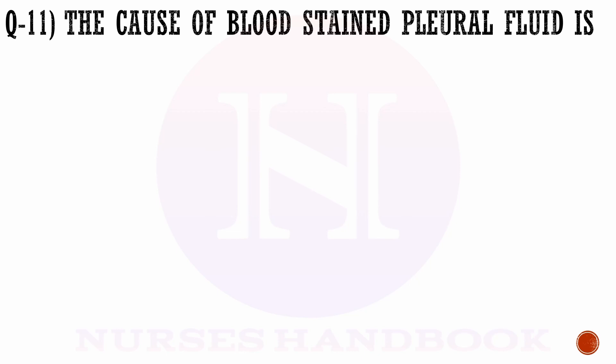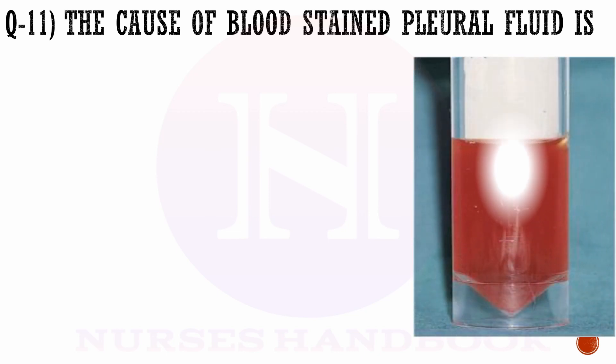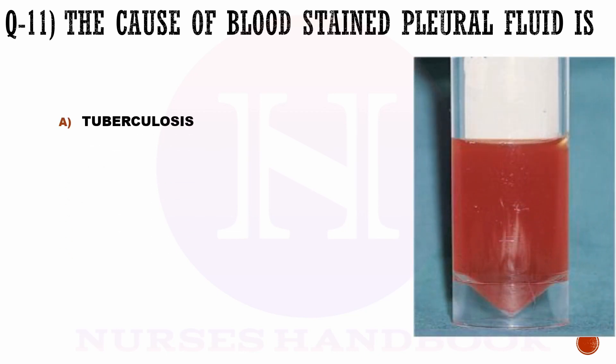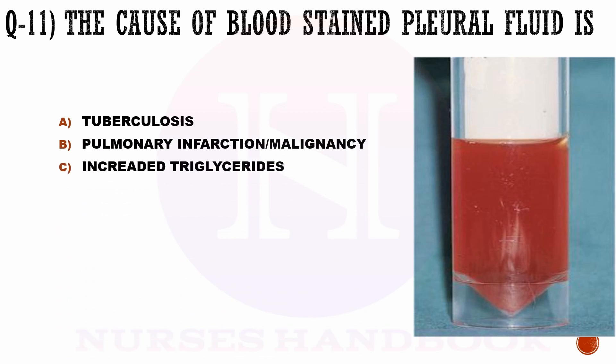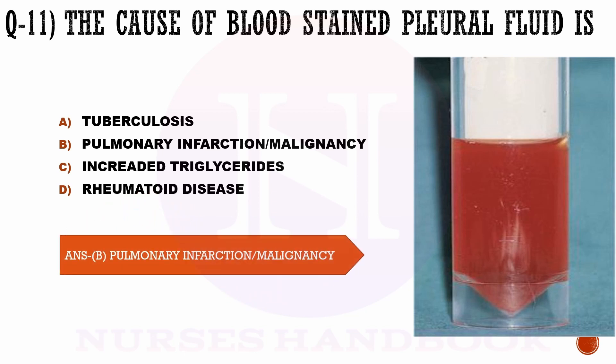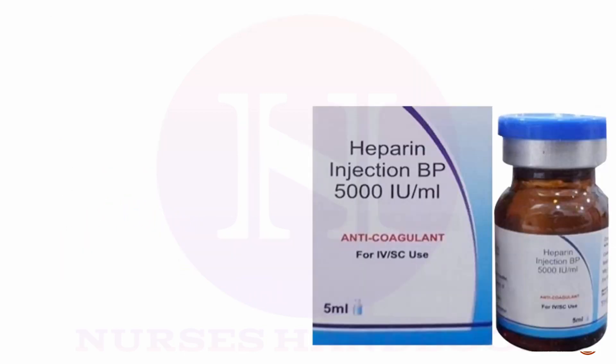Question number 11. The cause of blood-stained pleural fluid is: option a) tuberculosis, option b) pulmonary infarction or malignancy, option c) increased triglycerides, and option d) rheumatoid disease. The correct answer is option b, pulmonary infarction or malignancy.